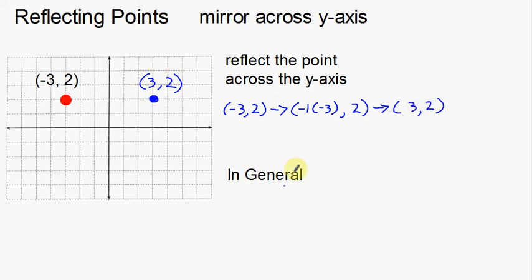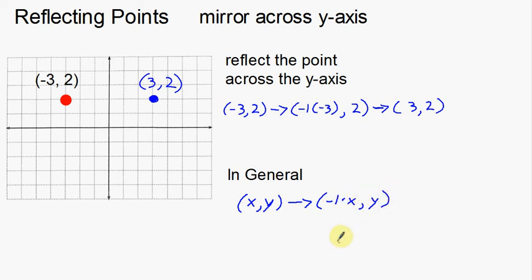In general, for any point, we take our x, y coordinates and we change them by multiplying the x-coordinate by a negative one. We multiply the x-coordinate by negative one, and that gets us to reflect — to mirror — across the y-axis. That is reflecting points: both reflecting across the y-axis and across the x-axis.